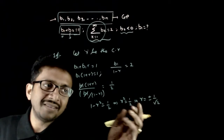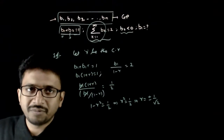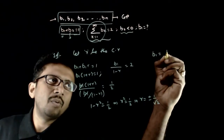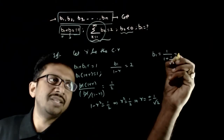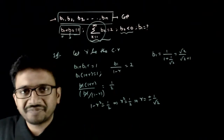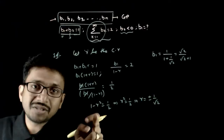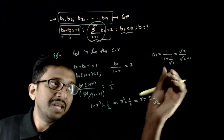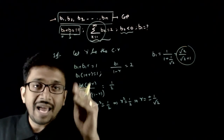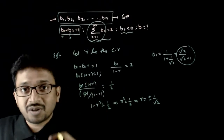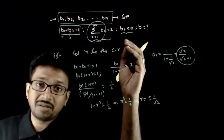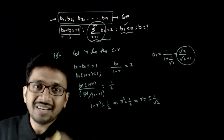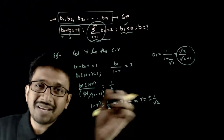If r is plus 1/√2, then b1 equals 1 divided by (1 + 1/√2), which is root 2 divided by (root 2 + 1) — a positive value. Since r and b1 are both positive, b2 = b1·r would also be positive. But the question states b2 is negative, so r must be negative. Therefore r must be minus 1 over root 2.